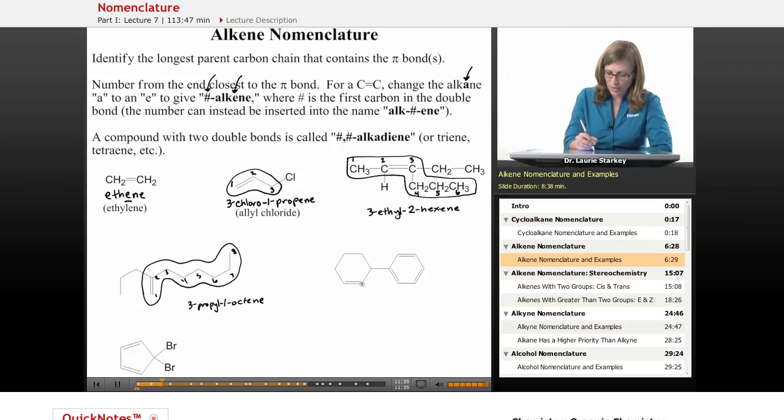So if I numbered from here, one, two, three, four, five, six, the substituent wouldn't be until position six. If I numbered this way, one, two, three, I get the lowest number for the double bond. That has to be at carbon one. And then I also get the substituent at the lowest number.